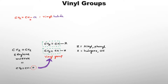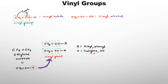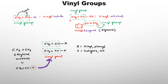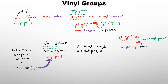Here you can see an example of vinyl halide. Remember that in the vinyl group, both carbons are SP2. So the chlorine is attached to an SP2 carbon, and this SP2 carbon is also attached to another SP2 carbon — that is the characteristic of the vinyl group. Another example is vinyl alcohol. This one is vinyl benzene, known as the styrene molecule. Here the green rectangle marks the vinyl group. This is also a vinyl ether — phenyl vinyl ether.